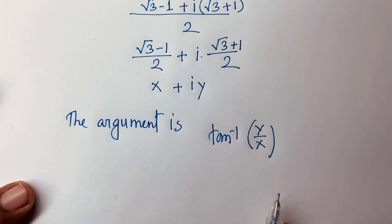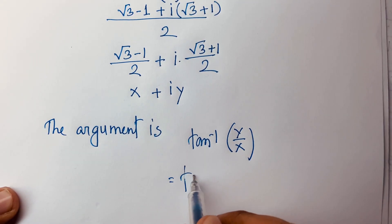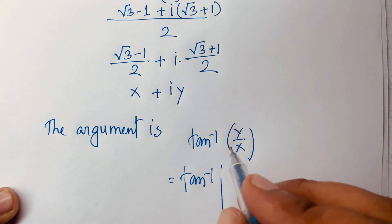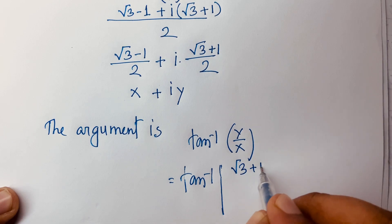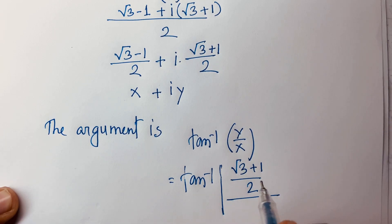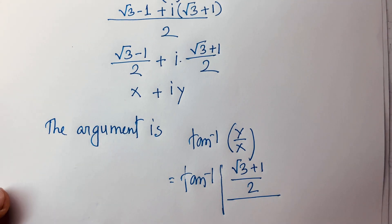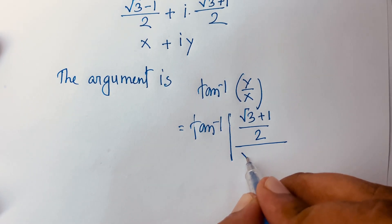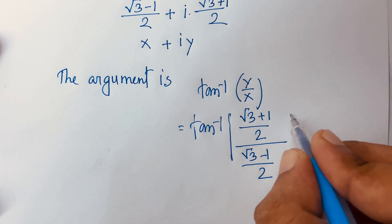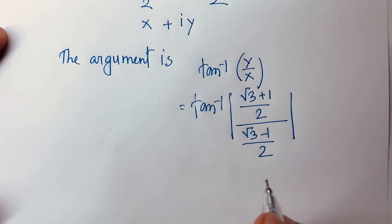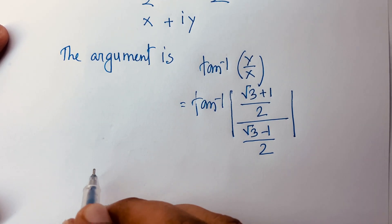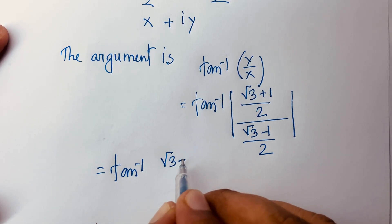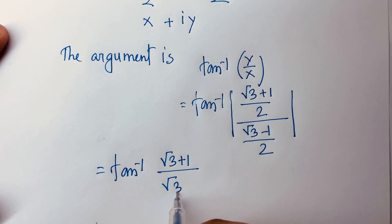Now I can say here is tan inverse, where y is (√3 + 1)/2 over x which is (√3 - 1)/2. The 2s cancel, and we find tan inverse of (√3 + 1) over (√3 - 1).